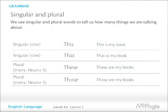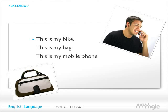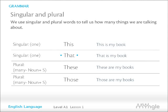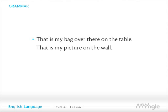We use singular and plural words to tell us how many things we are talking about. We use 'this' to talk about one singular thing which is near to us. For example: this is my book, this is my bike, this is my bag, this is my mobile phone. We use 'that' to talk about one singular thing farther away. For example: that is my book. That is my bag over there on the table.